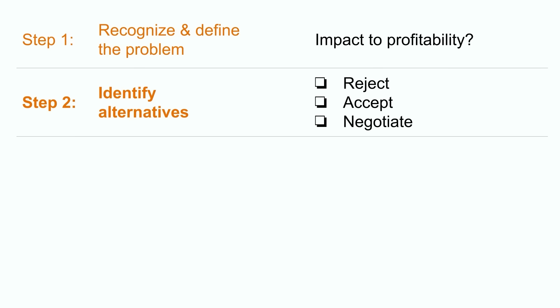Step two is to identify and list out the possible solutions. In this case, let's assume that management came up with the following options: they could reject the special order, accept the special order, or negotiate a higher price. In this step, they also may want to eliminate options that are not likely feasible. For example, they may have already tried to negotiate with the customer, or the customer may have made it clear that $30 was the final price they were willing to pay for this special order. Therefore, they could eliminate option three.